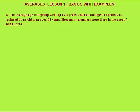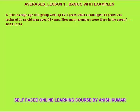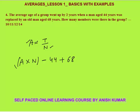Next question: the average age of a group went up by 2 years when a man aged 44 years was replaced by an old man aged 68 years. How many members were there in the group? We don't know average or group size, so assume average was A and there were N persons. Total age initially = A × N. Then the 44-year-old left (subtract 44) and the 68-year-old joined (add 68). New total = A × N − 44 + 68.